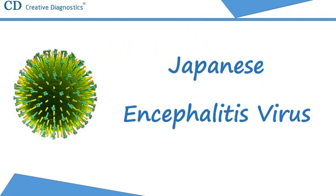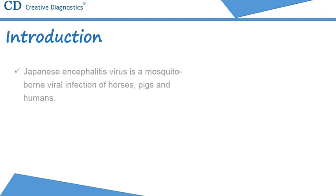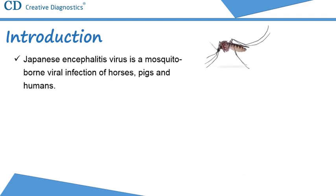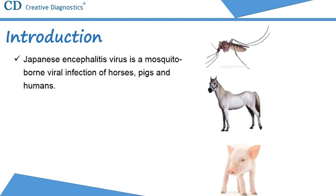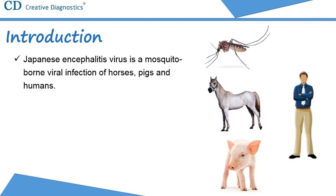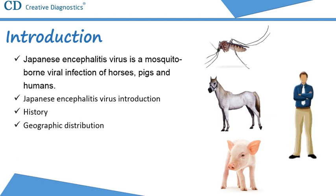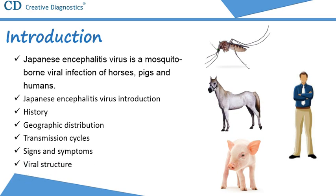This video provides an overview of the Japanese encephalitis virus. Japanese encephalitis is a mosquito-borne viral infection of horses, pigs and humans. In this video we will talk about the Japanese encephalitis virus introduction, history, geographic distribution, transmission cycles, signs and symptoms, viral structure, and finally we will address prevention and control measures for the disease as well as actions to take if Japanese encephalitis is suspected.